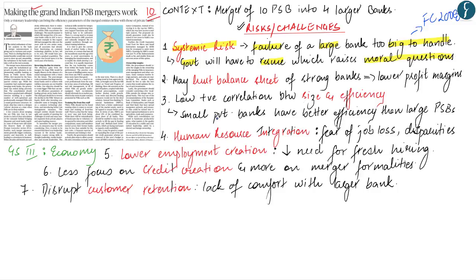Secondly, mergers are usually undertaken to prevent the collapse of weak banks, however in some instances the poor balance sheet of weak banks ends up hurting the balance sheets of stronger banks, leading to lower profit margins of the strong banks. The third challenge is with respect to the low positive correlation between the size of the bank and the efficiency with which they work. The merger of PSBs is undertaken on an assumption that a larger bank will be more efficient, however such positive correlation is not always true. In India, certain small private sector banks have better efficiency and performance compared to large public sector banks.